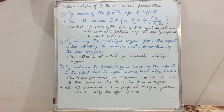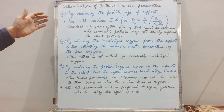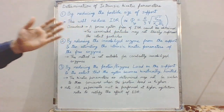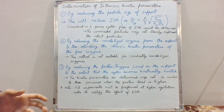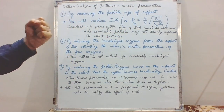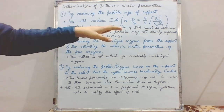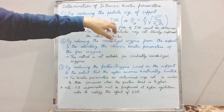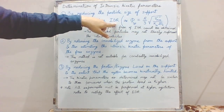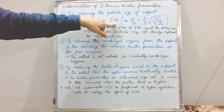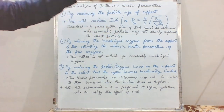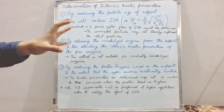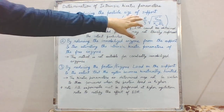The first strategy is reducing the particle size of the support on which we are immobilizing the enzyme. When we reduce the particle size, the Thiele modulus — which appears in the IDR equation, the dimensionless equation for internal diffusional restrictions — is directly proportional to the radius of the particle.